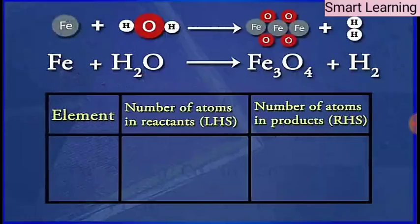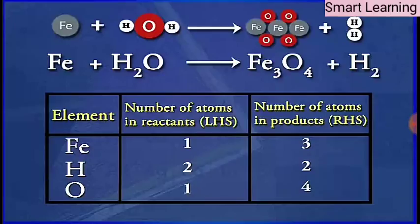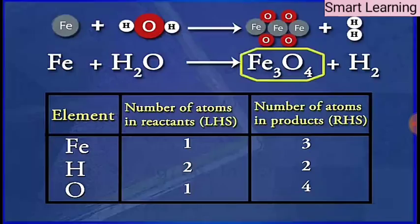List the number of atoms of different elements present in the unbalanced equation on either side. After listing and identifying the different atoms, start balancing the equation with the element having the maximum number of atoms in a compound. We find that Fe3O4 has the highest number of atoms with a maximum number of oxygen atoms in it.